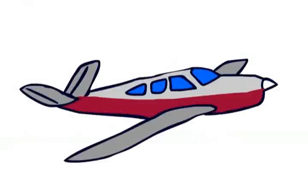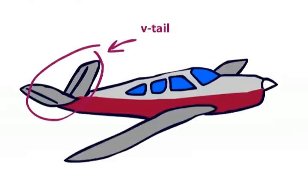Similarly, you can get a V-tail like this Beechcraft Bonanza, which combines the elevator and the rudder.